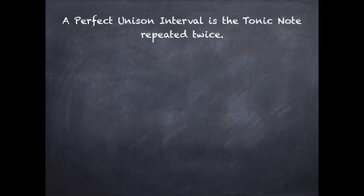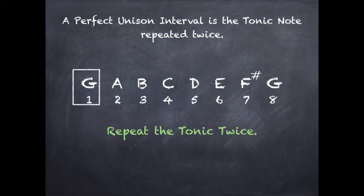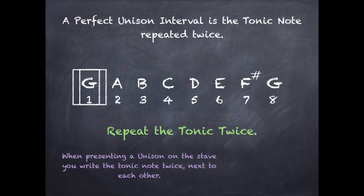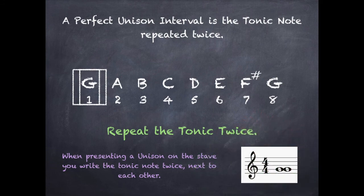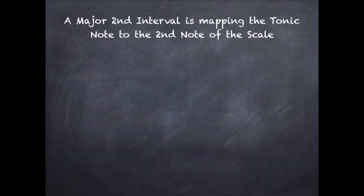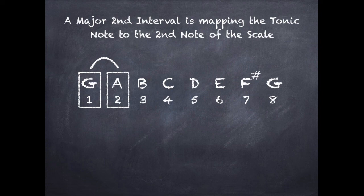A perfect unison interval is the tonic note repeated twice. Using a G major scale, if I repeat the tonic note twice, I have a G unison. When presenting this on a stave, you write the tonic note twice next to each other. A major second interval maps the tonic to the second note, so from G to A — a major second above G is A.